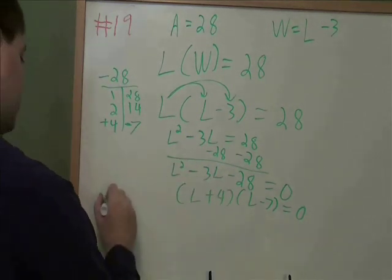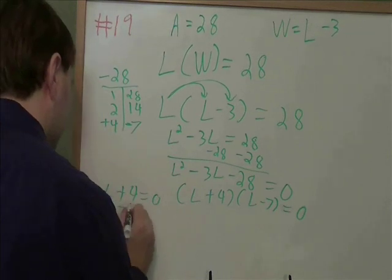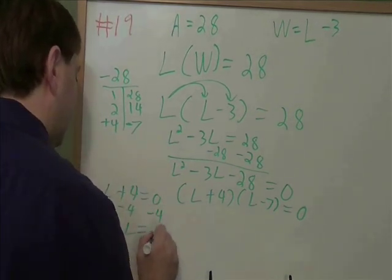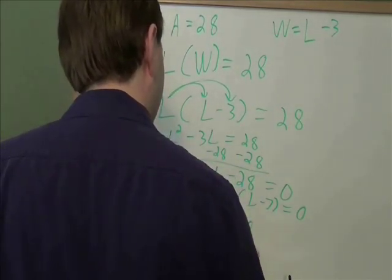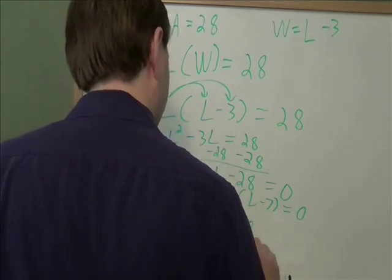And then we set each of these equal to 0 on their own. If l plus 4 equals 0, you subtract 4. You get that l has to equal negative 4. If l minus 7 equals 0, you add 7. And you have to get that l is positive 7.